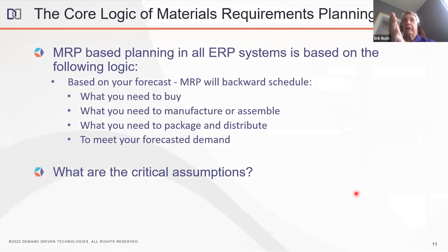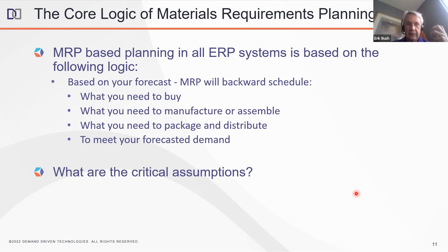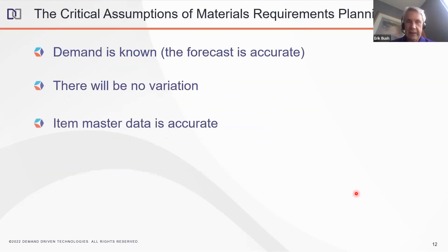For those in the audience not really exposed to DDMRP, let me talk a little about the elements of DDMRP and how they differentiate. This is not a certification class — just a quick flyby to give you an idea of the core principles. If we look at MRP as a concept, it's based on the following logic: tell me what the forecast is and what demand you need to satisfy, and it will inform us based on backwards scheduling what we need to buy, produce, package and distribute to meet demand. That's based on a couple of critical assumptions: first, that demand or the forecast is accurate — pretty much everybody accepts forecast accuracy is always going to be a problem, especially with more products slicing the pie into smaller bits. Second, that there's not going to be any variation — we know that's not reality. And third, that your item master data is accurate.